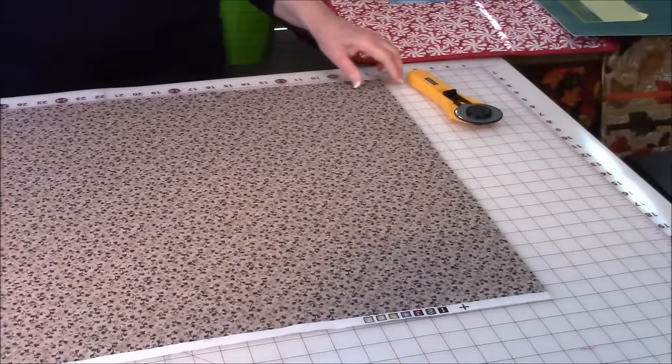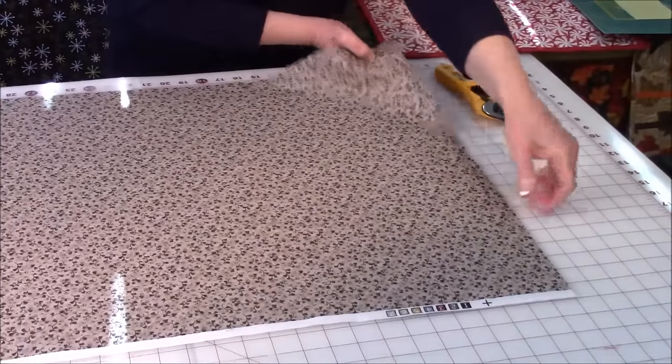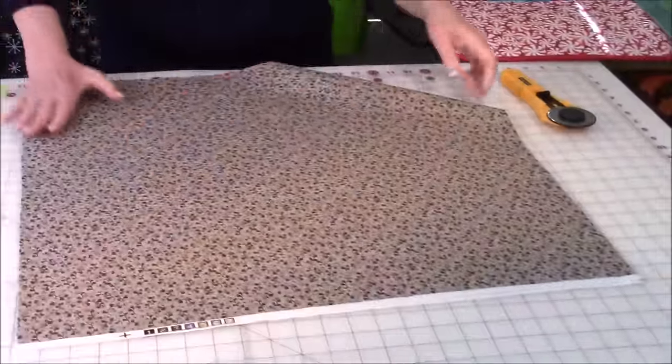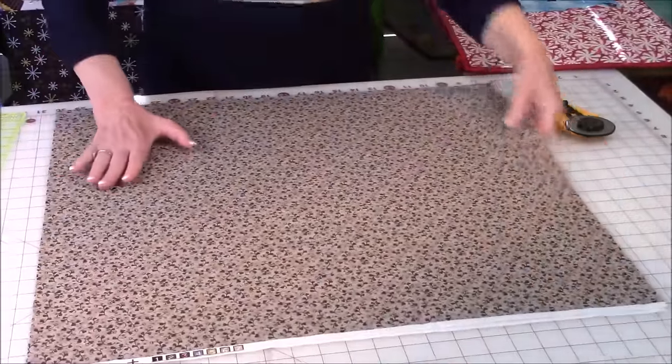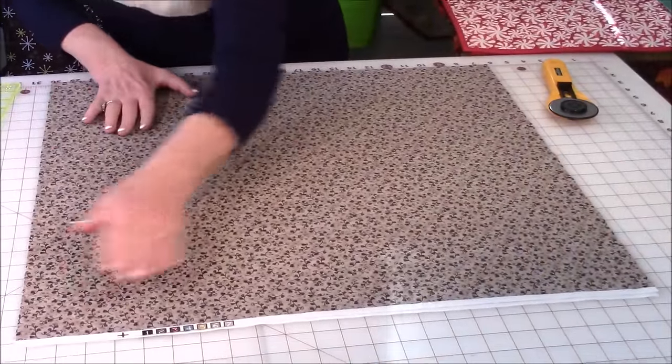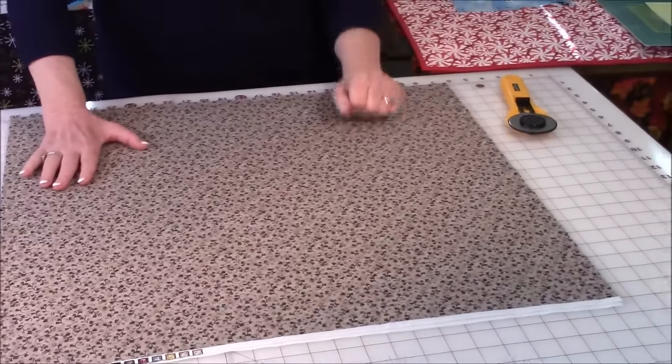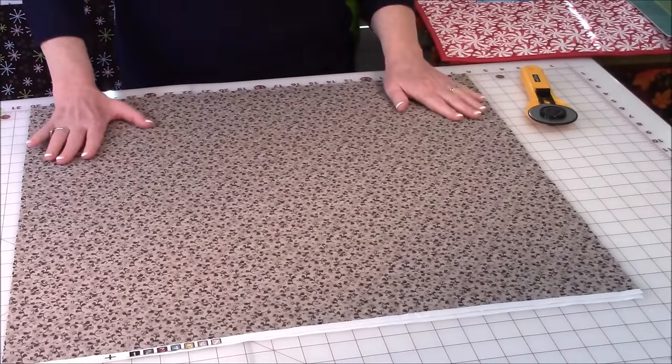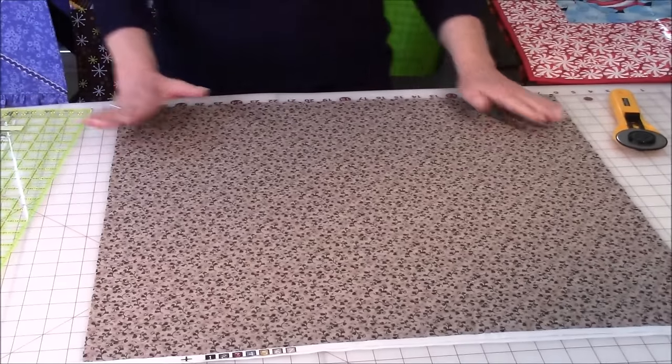Then the next thing you want to do is lift your fabric and flip it to the other side. Smooth out your fabric. Make sure the raw edges are together and then cut off that other side where your zigzag stitches are. Now your fabric is ready to be cut.